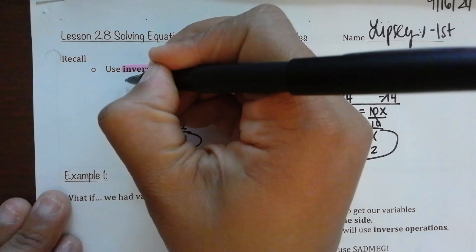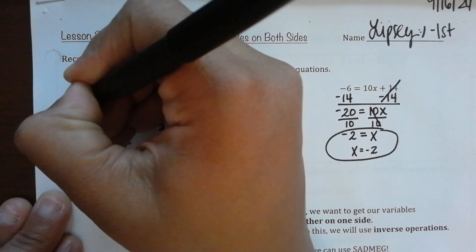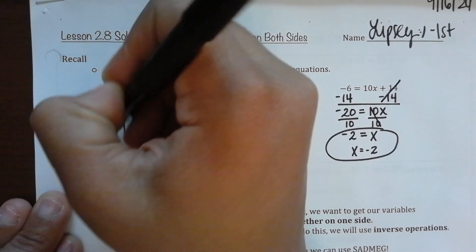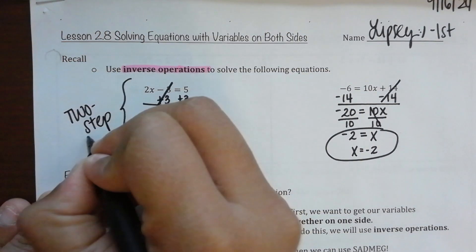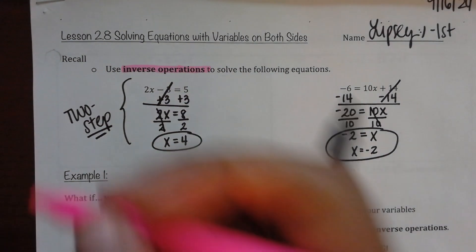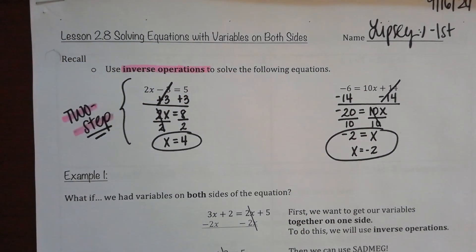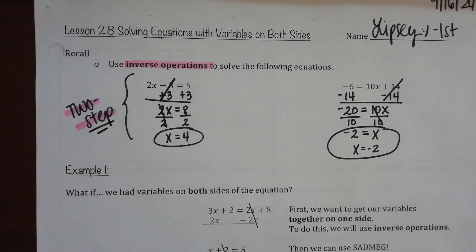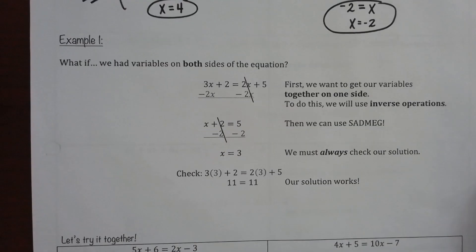This is just review of 2-step. So, if you need to write that, write that in. This is just review of 2-step. Example number 1 says, what if we had variables on both sides of the equation?